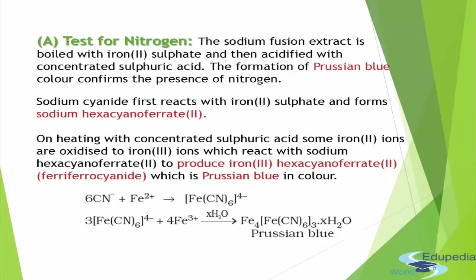First, let's run the test for nitrogen. We take the sodium fusion extract and boil it with iron sulfate (FeSO4), then acidify it with concentrated sulfuric acid (H2SO4). If we get a Prussian blue color, it confirms that nitrogen was present. This Prussian blue color is because of the cyanide ion.